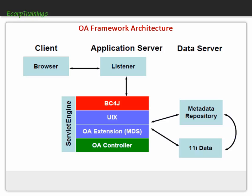Here we have the basic architecture of Oracle Application Framework. It contains three parts: the client, where users send requests through the browser; the application server, which listens to and processes the request — its servlet engine contains Business Components for Java, UIX which contains and modifies screens according to requirements, and MDS (Metadata Storage) which contains the complete architecture of data stored, along with OA controllers; and finally the data server, where the metadata repository database resides. This is the direction of data flow in Oracle Application Framework.